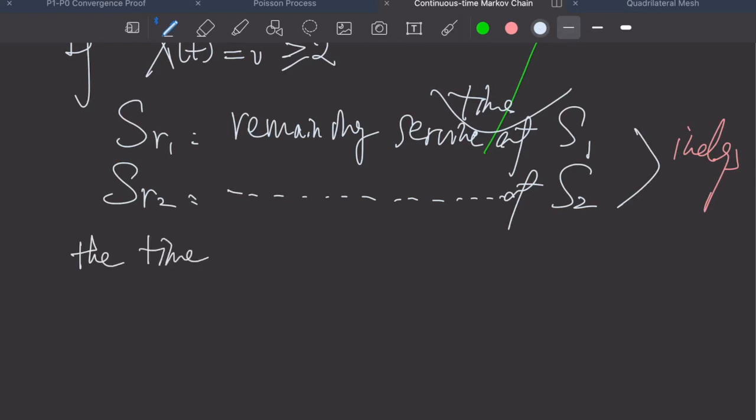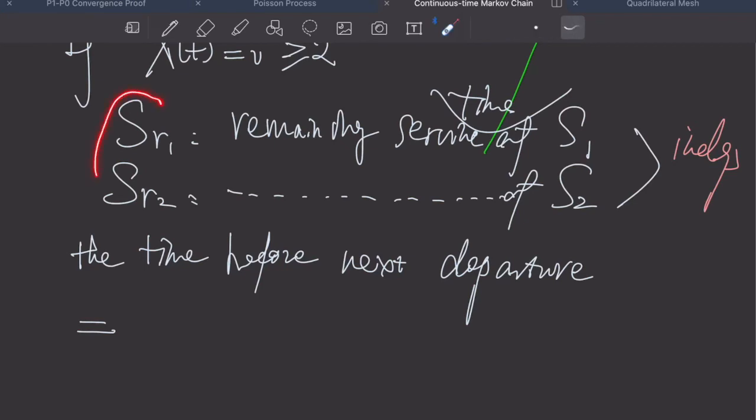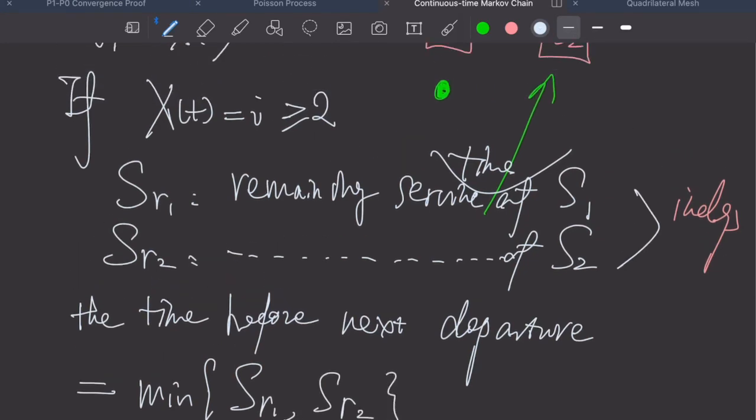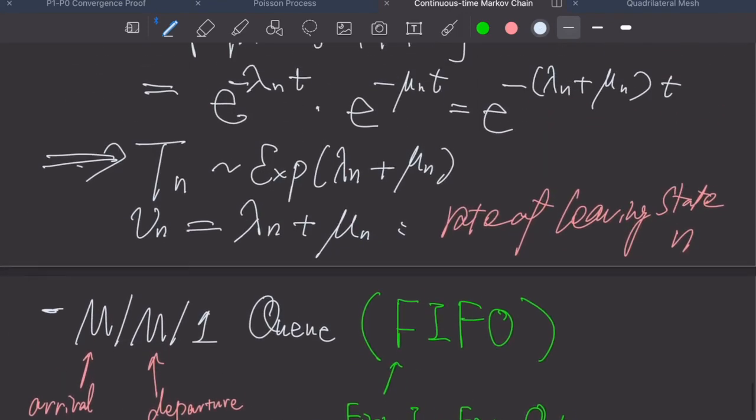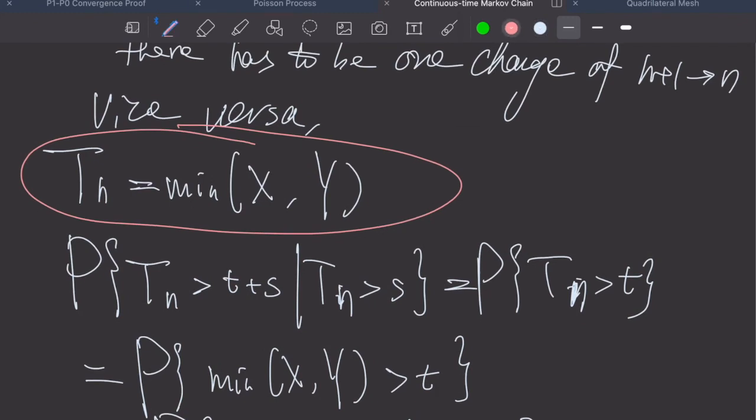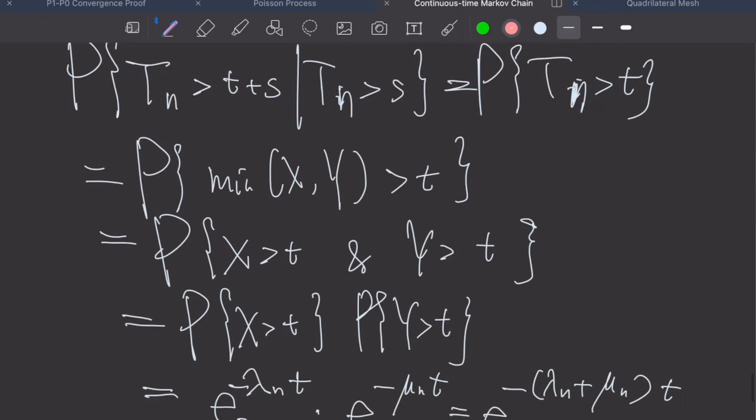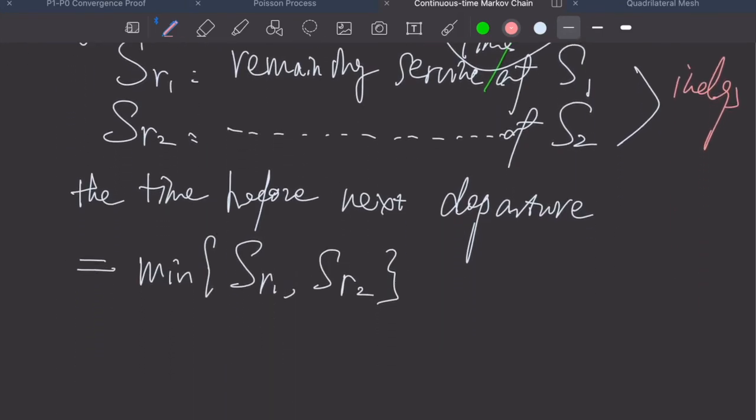As a result, we know that the time before our next departure is then, because we have two servers in service, whichever finishes first is going to admit another customer, which means there is another departure. This means the time until next departure is just the minimum of these two. As a result, this is exponential distribution of mu plus mu.